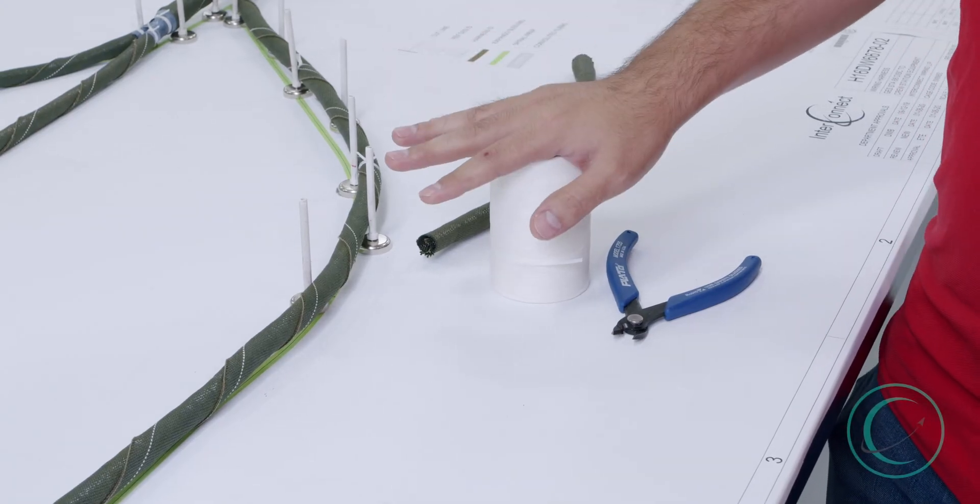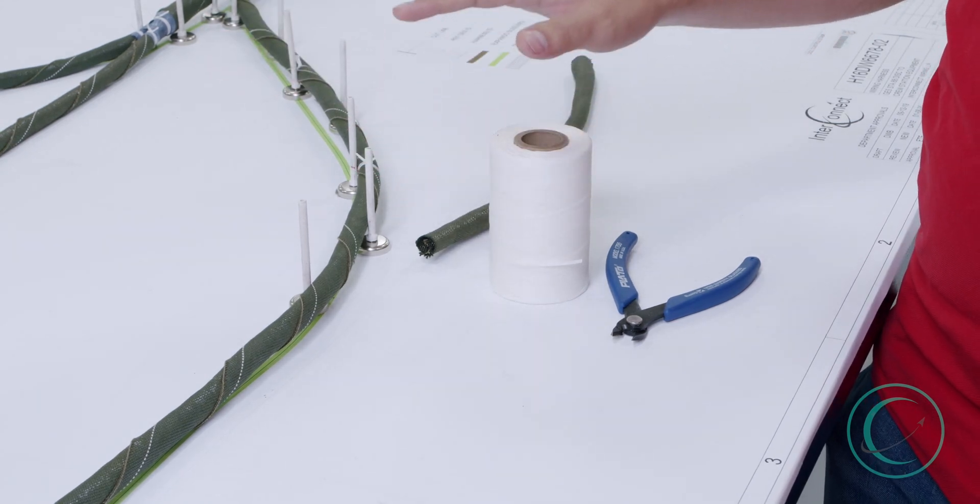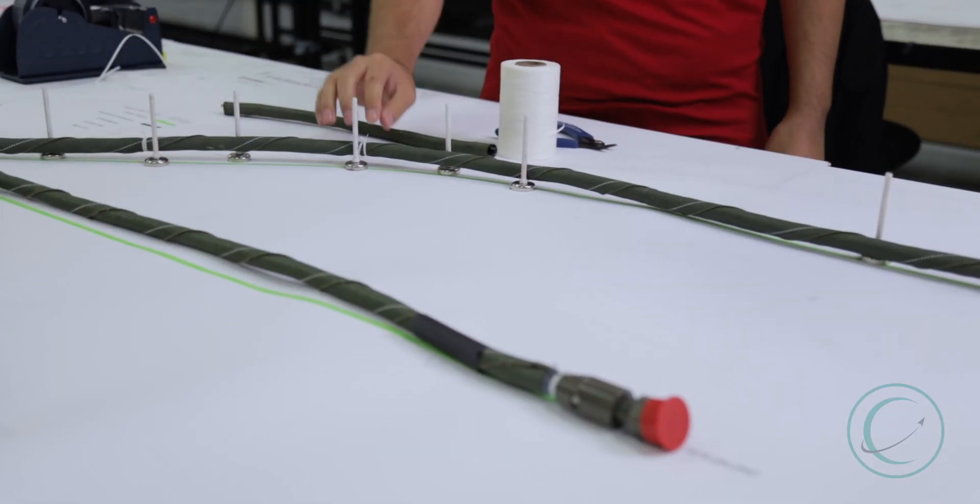The purpose of string tie is to transform a group of individual wires into one wire bundle. As you can see right here, these string ties provide support for the harness.